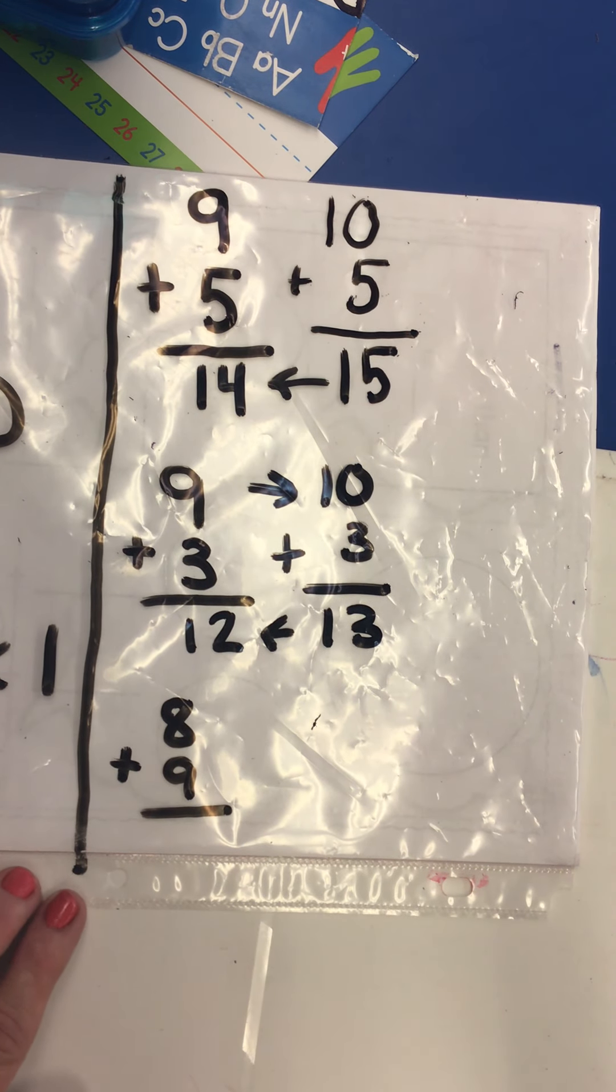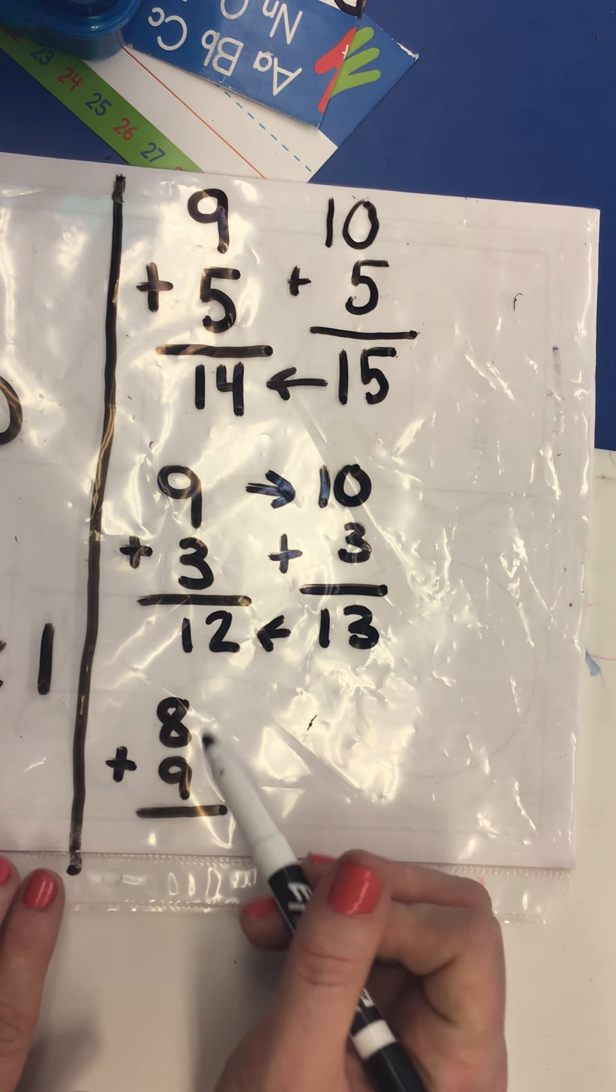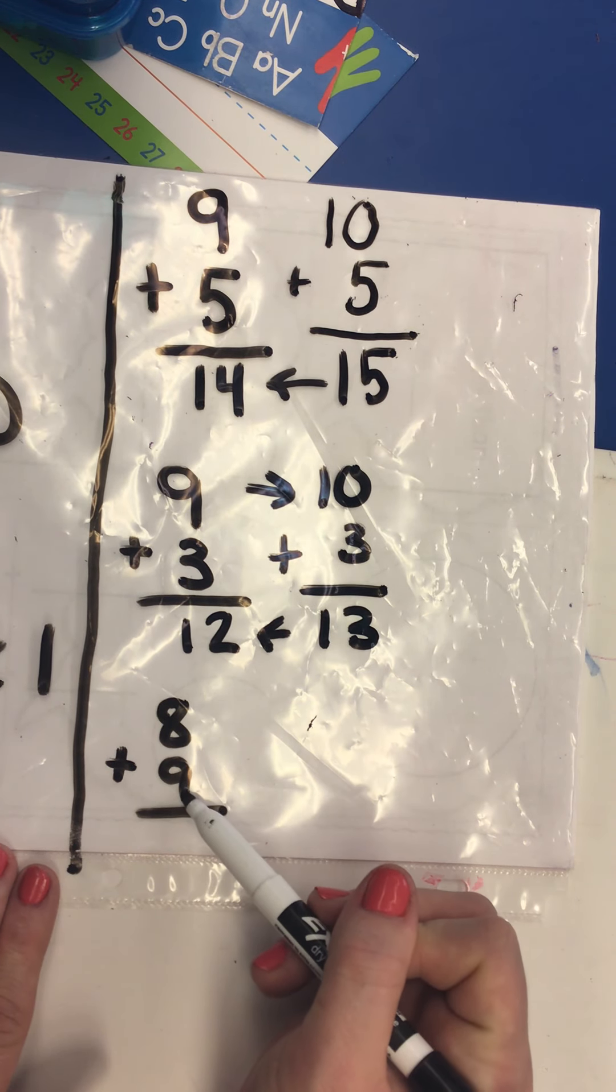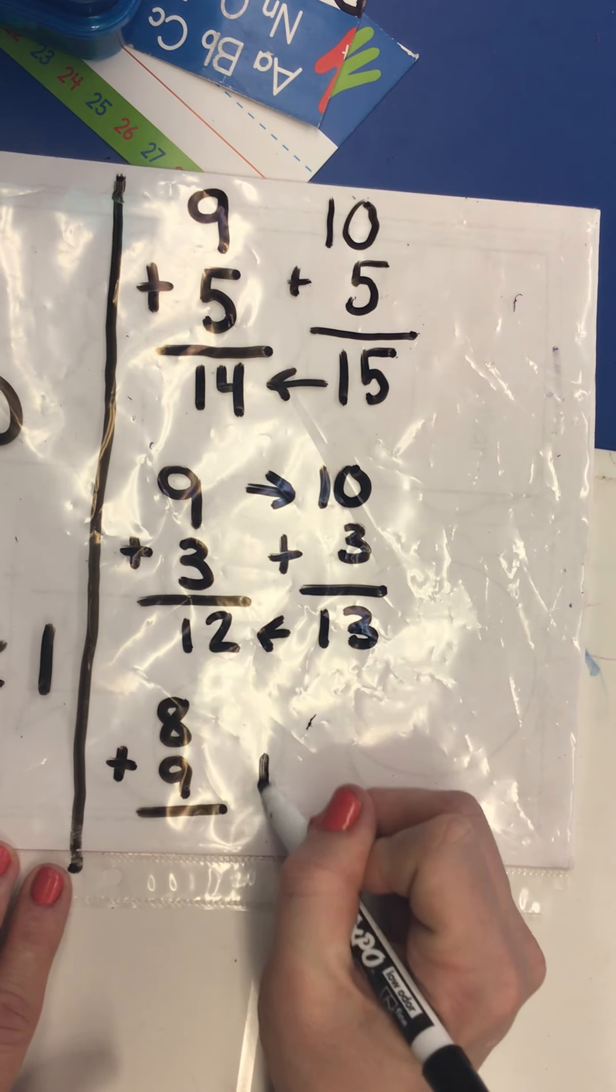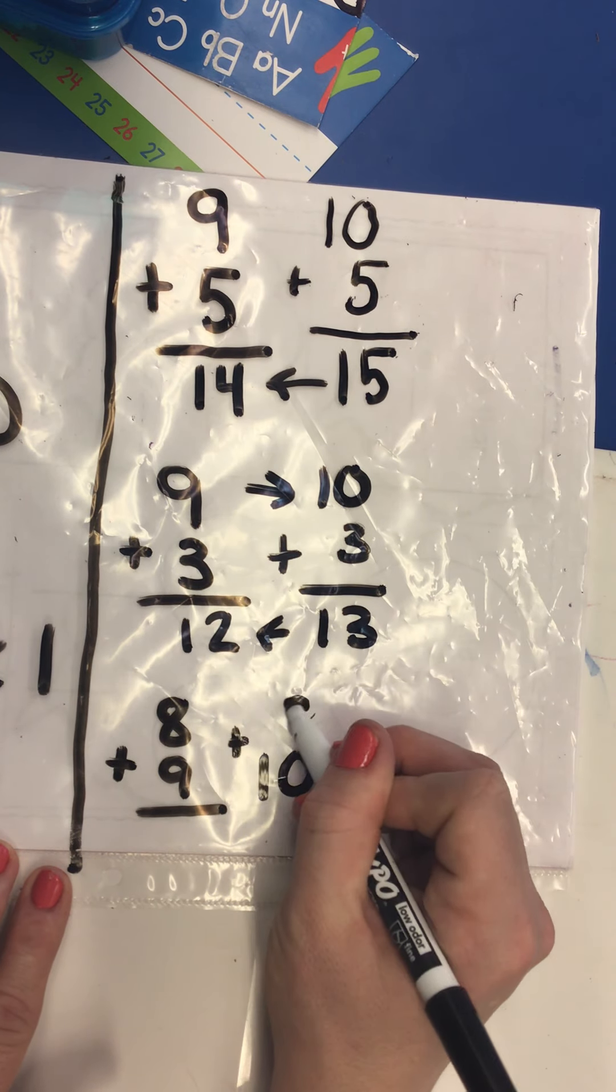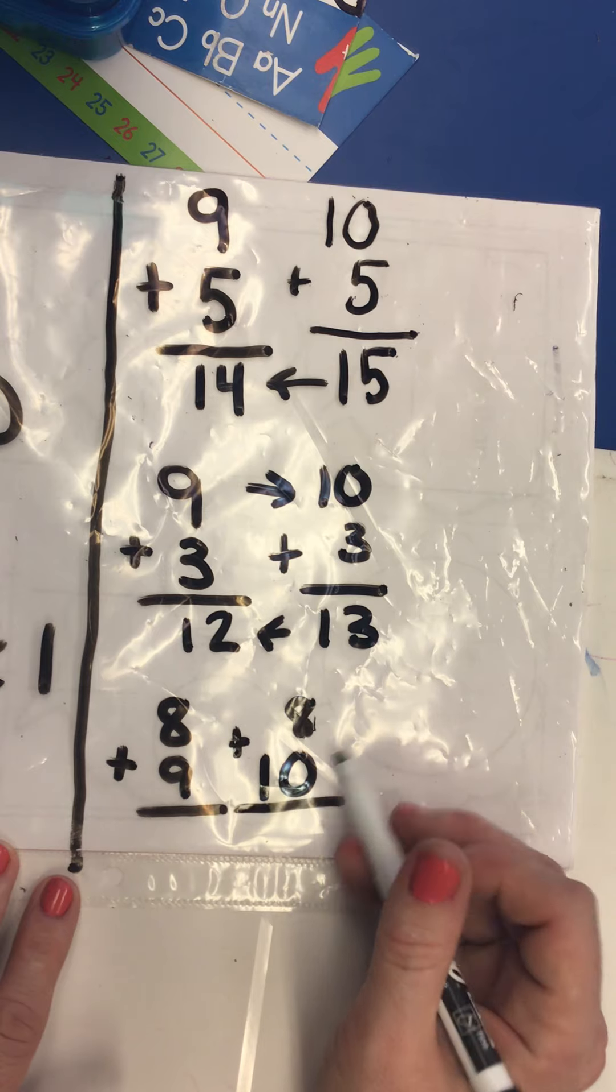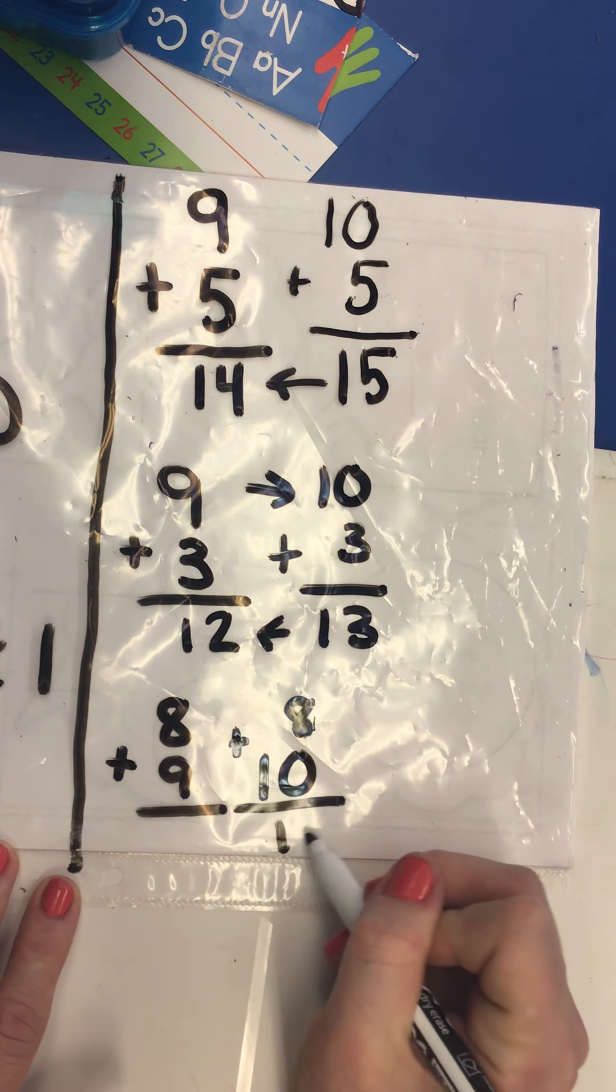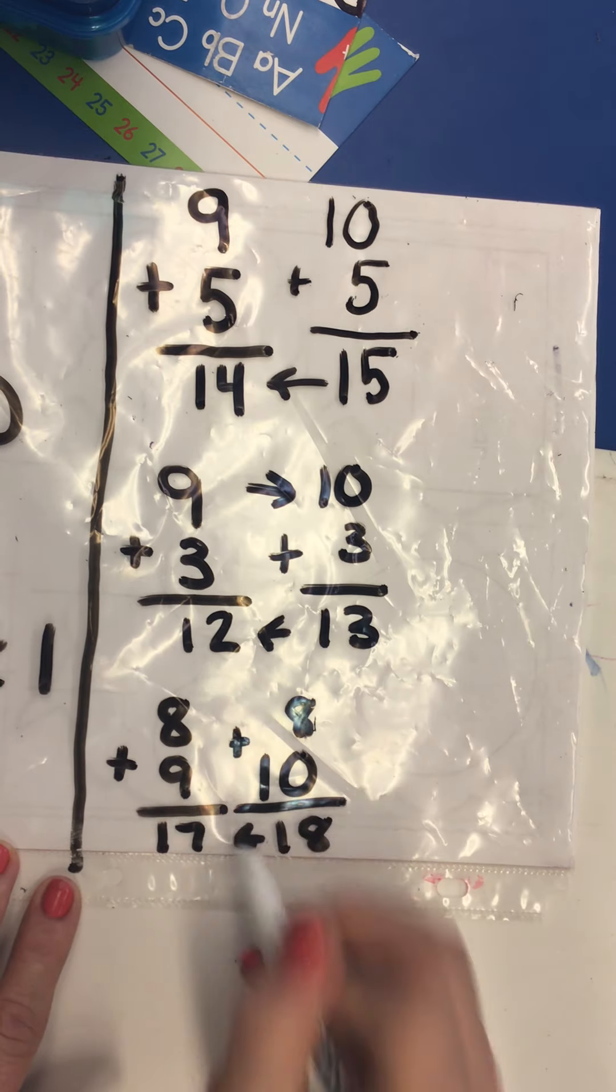Now on my last one here. Oh, my eight comes first. Does that matter? Nope. I still see a nine. See nine, think 10, gotta add. Now this looks kind of funny here. This isn't typically how we would write it, but that's okay. 10 + 8 is 18, but hop back one, 17.